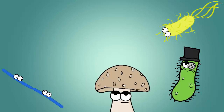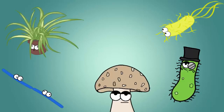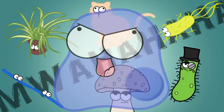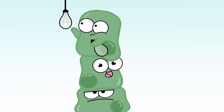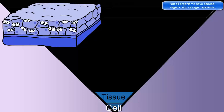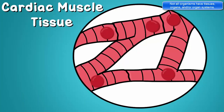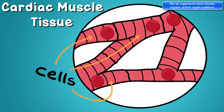It doesn't matter whether you are talking about bacteria, archaea, fungi, protists, plants, or animals — if you are talking about something alive, you are talking about something made up of one or more cells. Now when you have a lot of cells working together for a combined function, you end up with the next level: tissues. An example of tissue includes cardiac muscle tissue, which would be made up of many cardiac muscle cells.